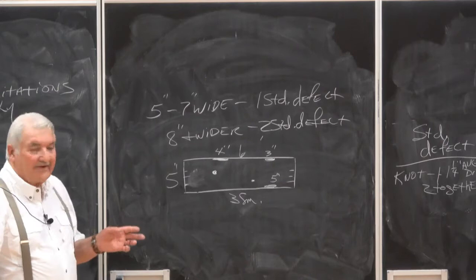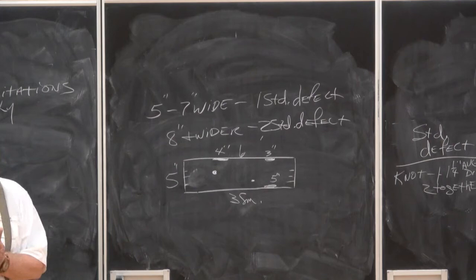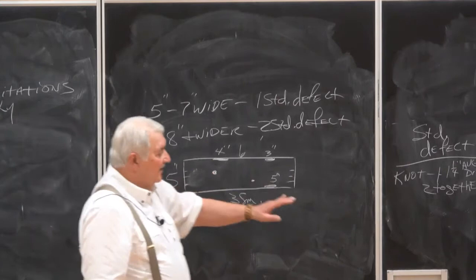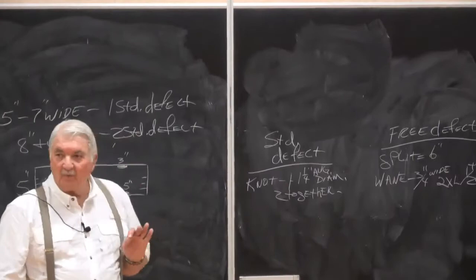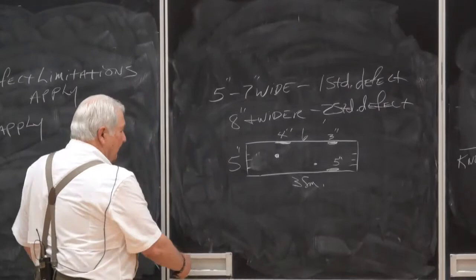For the sake of time, I want to show you the defects - what we're talking about for one standard defect. One knot, one and one quarter inch average diameter, or two together not to exceed one and one quarter inch average diameter, is one standard defect.